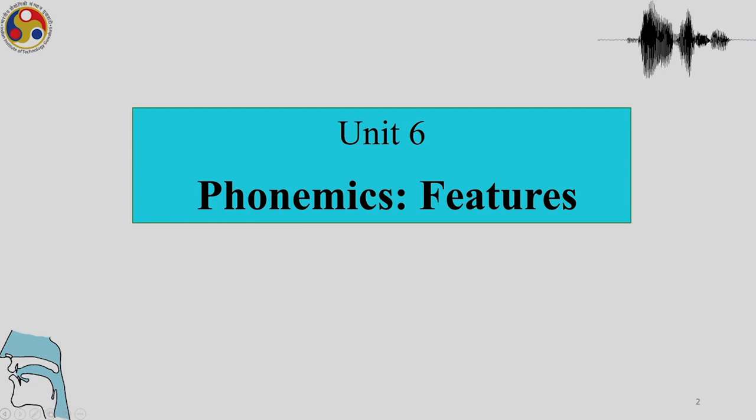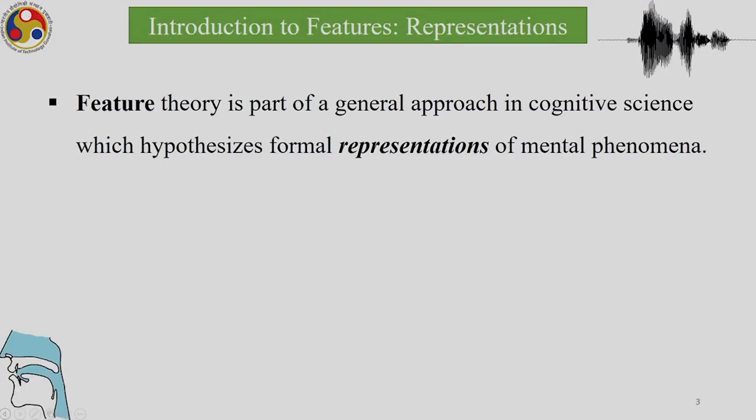We have talked about distinctive features in our various lectures when talking about phonology, about formalizing the properties of phonemes. Today you will see how features are used and what the components of a feature theory are. Feature theory is part of a general approach in cognitive science which hypothesizes formal representations of mental phenomena.